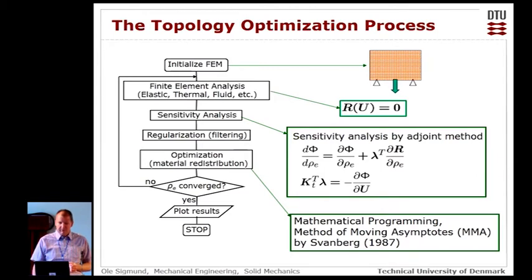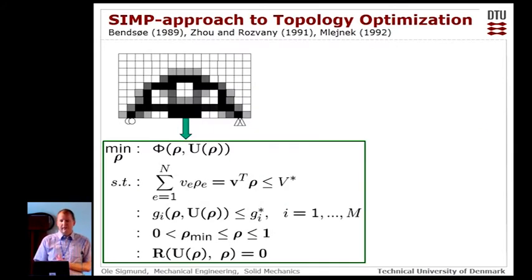To get a bit more into the details about it, we have the following optimization problem. So we have a design domain with design variables ρ, and they are collected in a density design variable vector bold ρ. And so we are trying to find the optimal distribution of these densities such that we minimize some objective function. It could be compliance or something more advanced. And this objective function could be a function of the densities, obviously, and the state variable U. Then we have a volume constraint, and we could have some other structural or geometrical constraints. And, of course, we have to satisfy the equilibrium given by this nonlinear residual formulation.